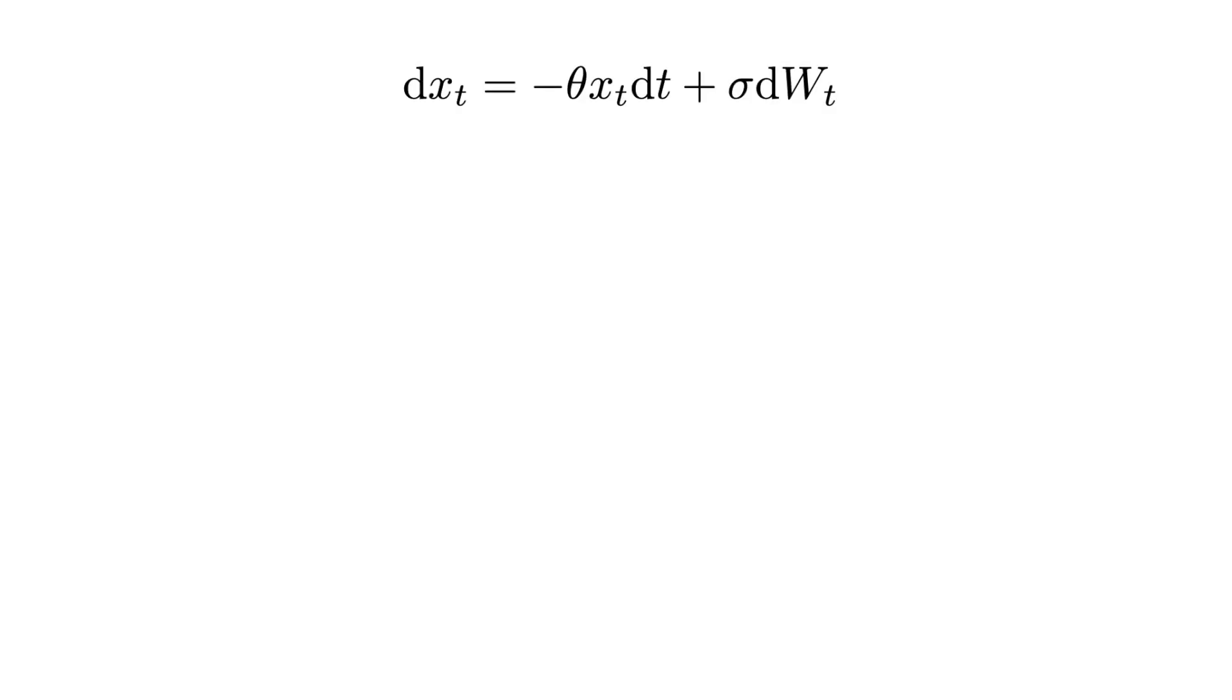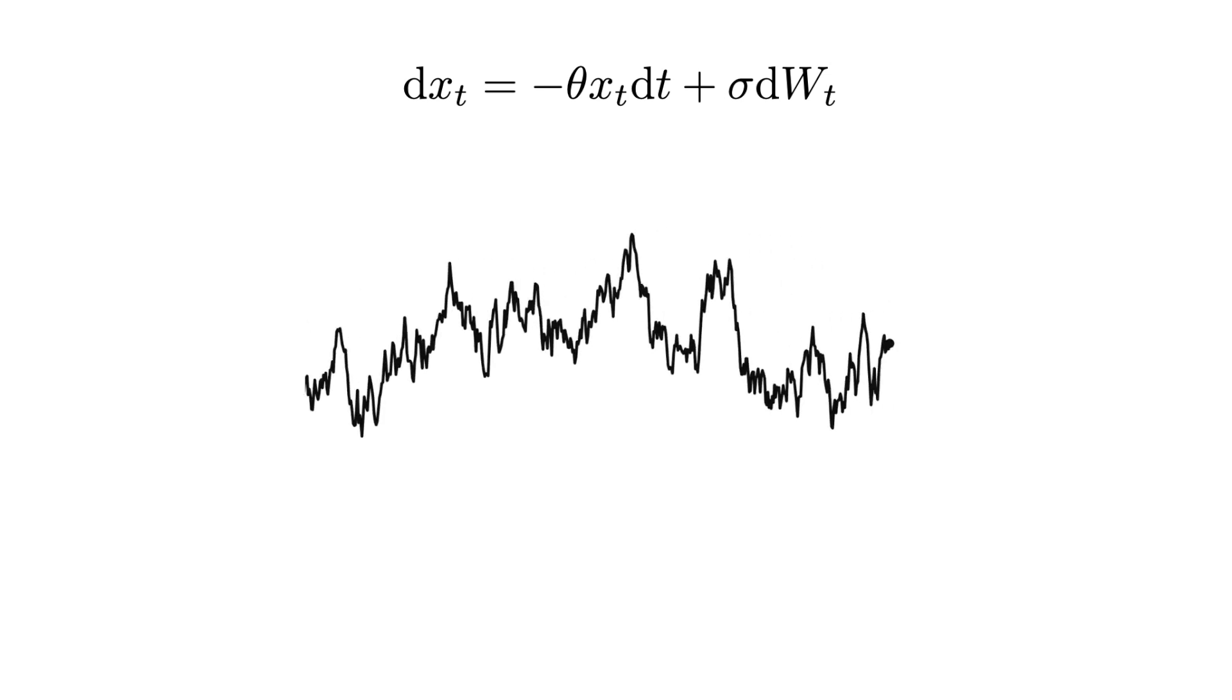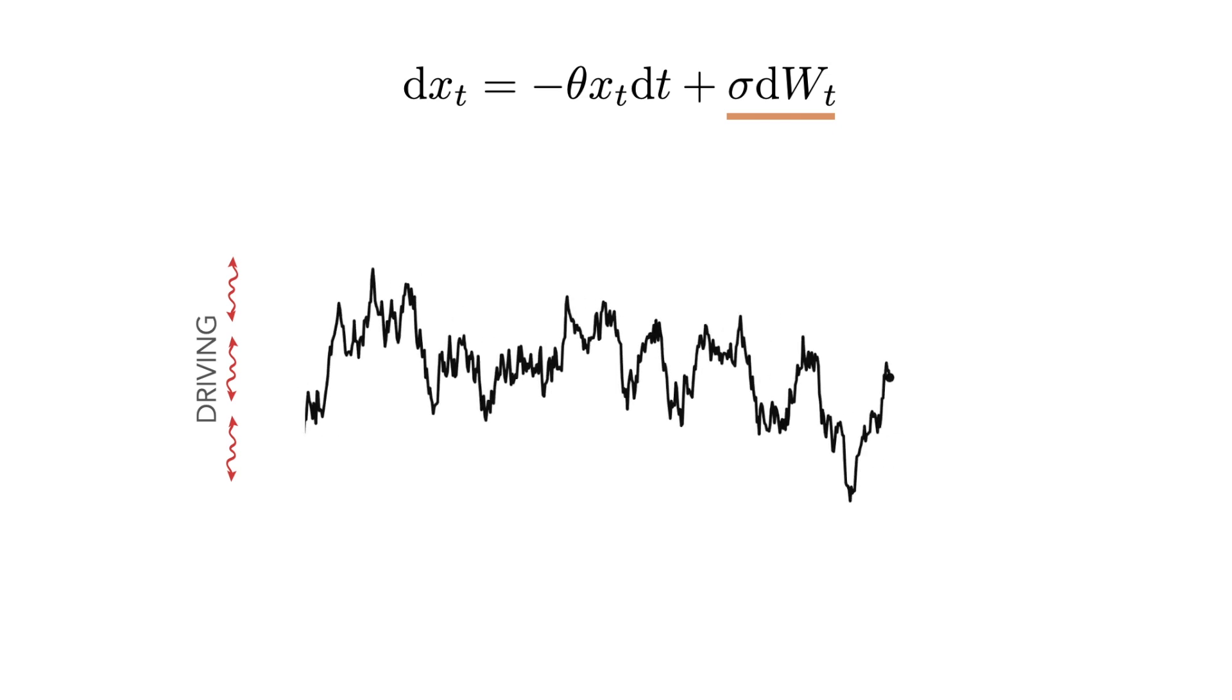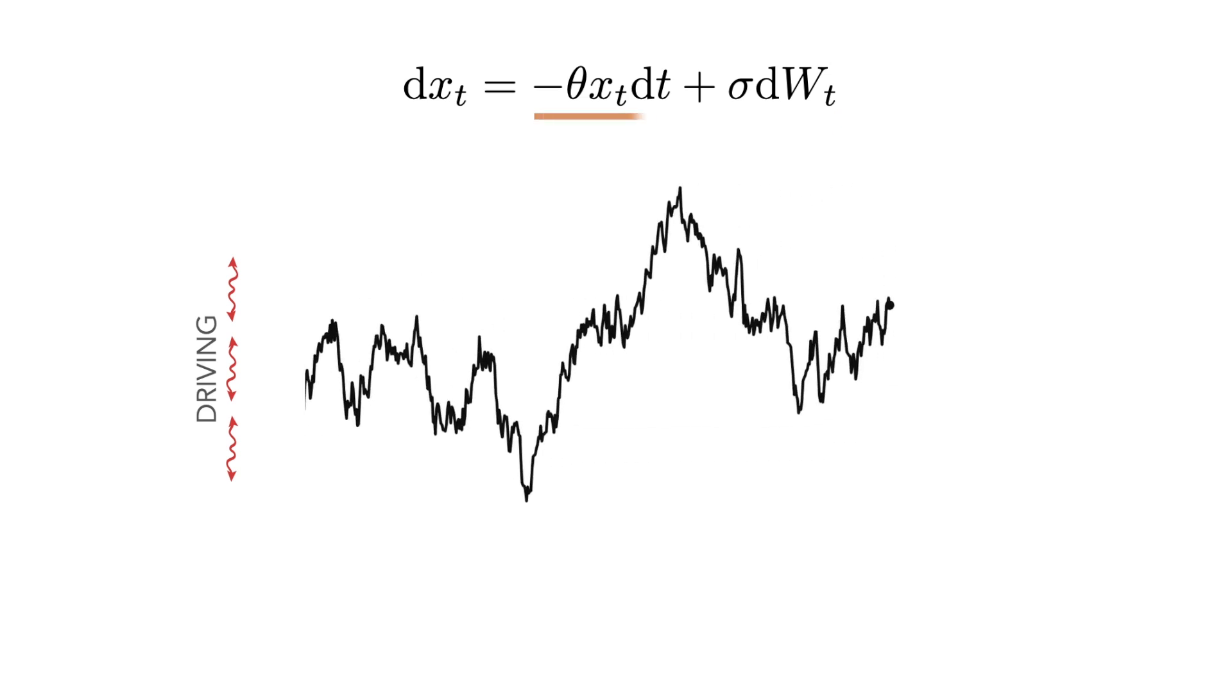With both terms present, we get the Ornstein-Uhlenbeck process. The second stochastic term drives the process by generating fluctuations, while the restoring term suppresses these fluctuations.